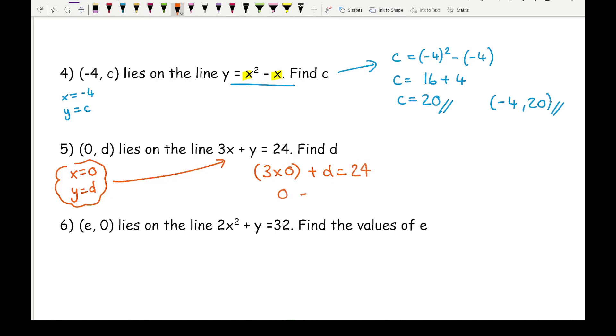Now 3 times 0 is 0, so I've got 0 plus d equals 24. Therefore, d equals 24. And writing it as a coordinate, I've got (0, 24).